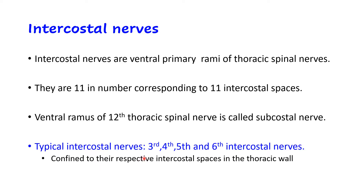Typical intercostal nerves are only four: the third, fourth, fifth, and sixth intercostal nerves. They are called typical because they are confined to their respective intercostal spaces in the thoracic wall — they do not supply any other part of the body. They supply the muscles and mainly the skin present over that intercostal space.